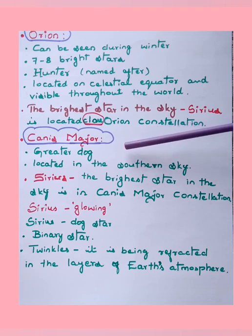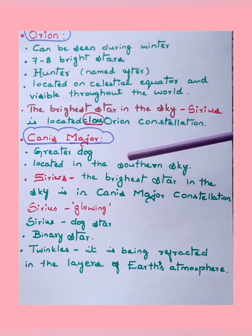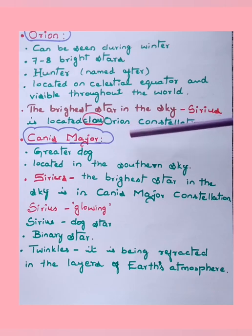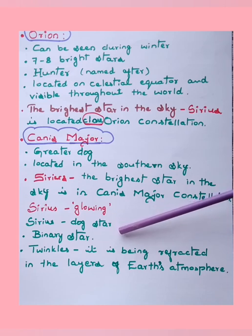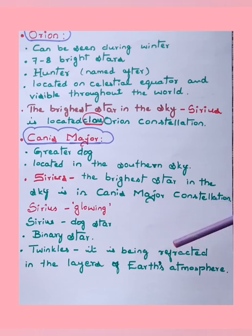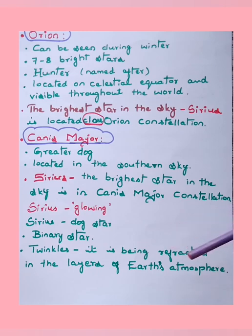Canis Major is also called the Great Dog and is located in the southern sky. Sirius, the brightest star in the sky, is in the constellation Canis Major. Sirius means 'glowing' and is also called the Dog Star; it is a binary star. Stars twinkle because their light is being refracted in the layers of the earth's atmosphere.